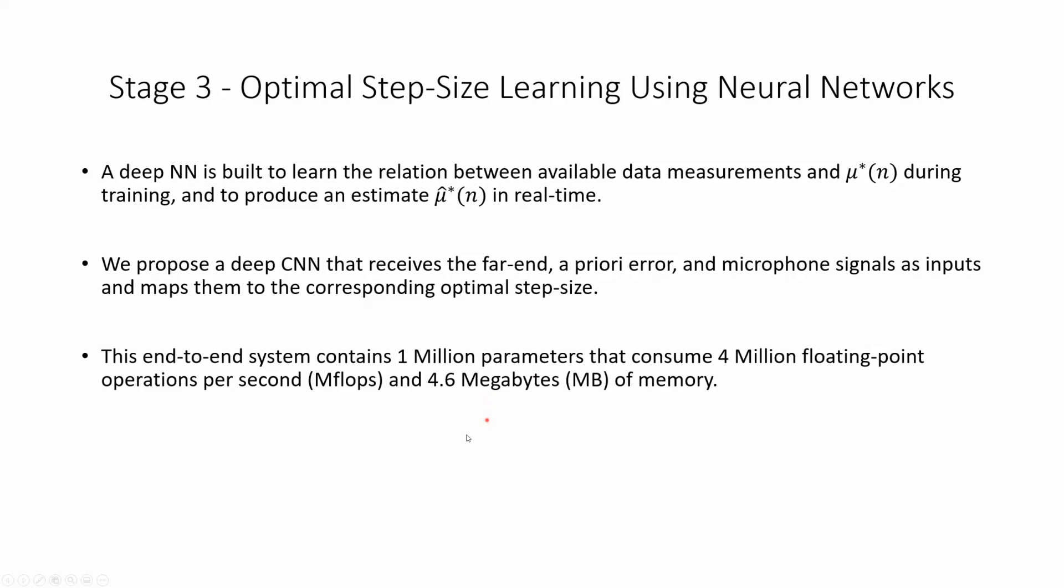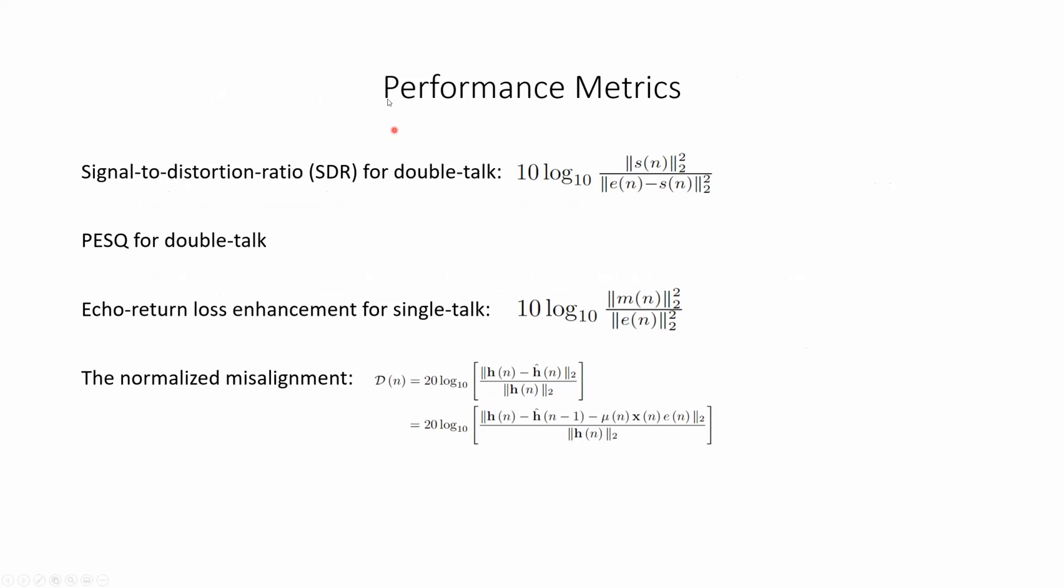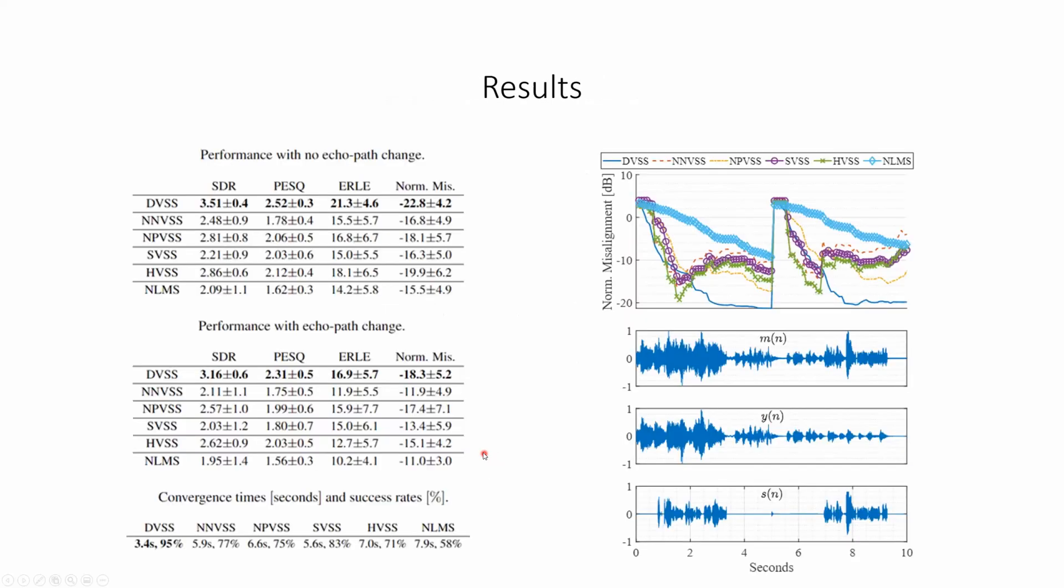Before introducing the results, we would like to baseline the performance metrics. There is the signal-to-distortion ratio between the speech and the error signal. There is the well-known PESQ, both of which are fit for double-talk analysis. For single-talk analysis of far-end signals, we use the ERLE, the echo return loss enhancement, and we also reported the normalized misalignment, which is very interesting.